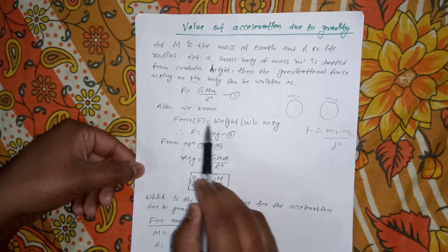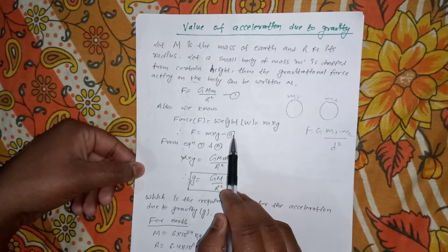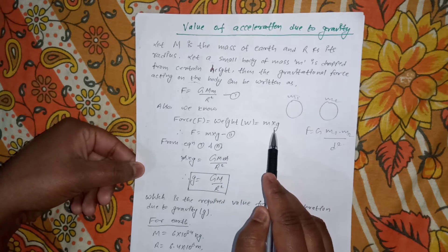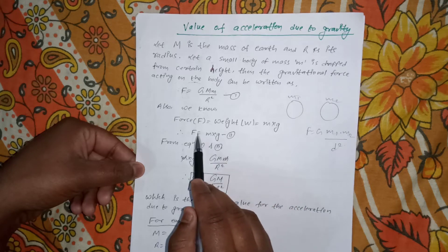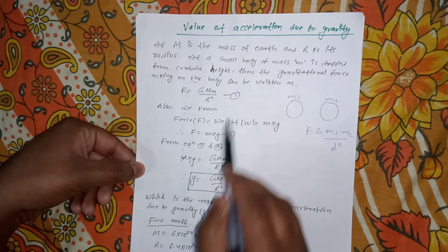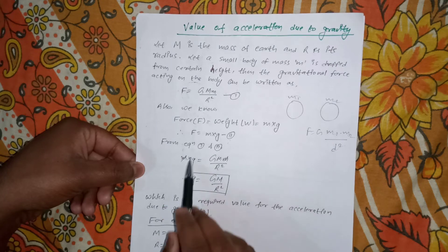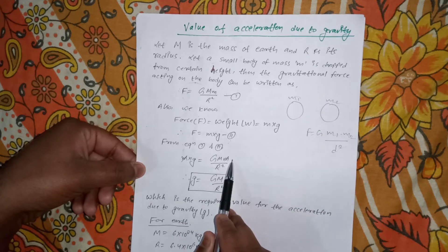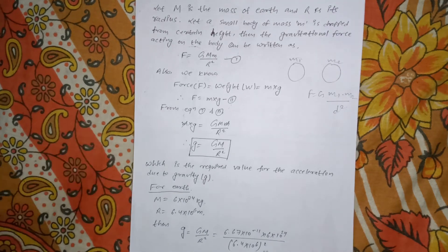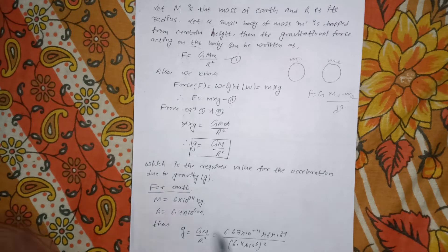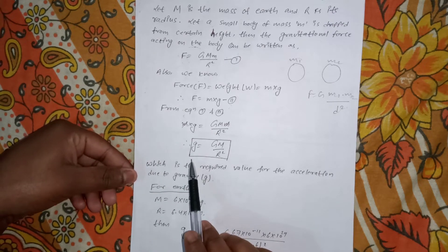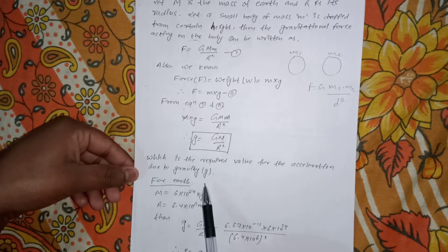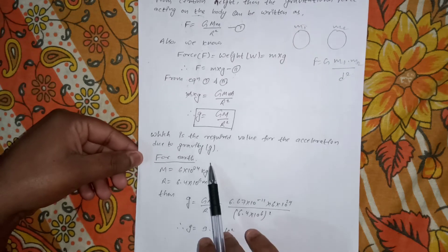Newton's universal gravitational law becomes F = G·M·m / R². We also know that the gravitational force equals the weight of the body, which is F = m·g. By equating these two equations, m cancels out, and we get: g = G·M / R². This is the value for the acceleration due to gravity of the Earth.